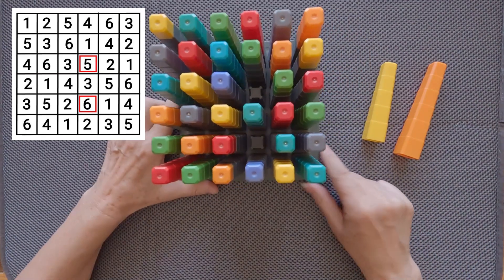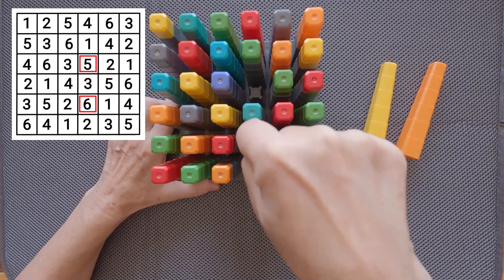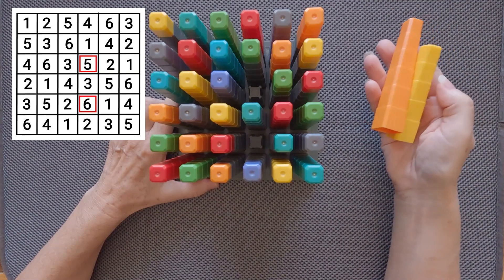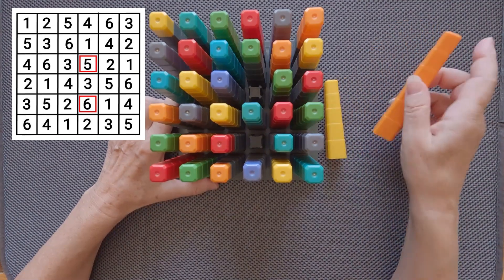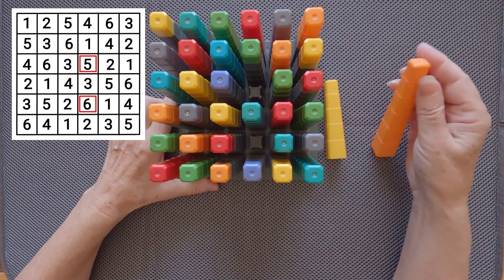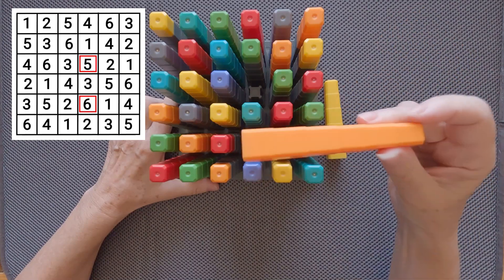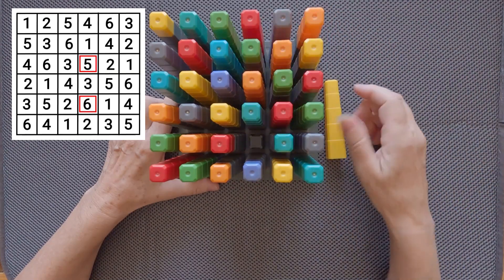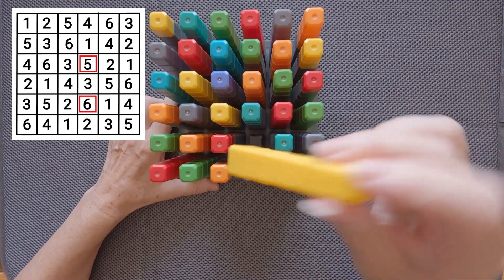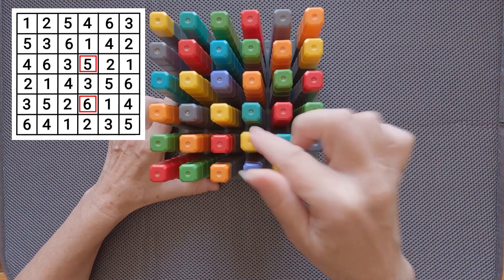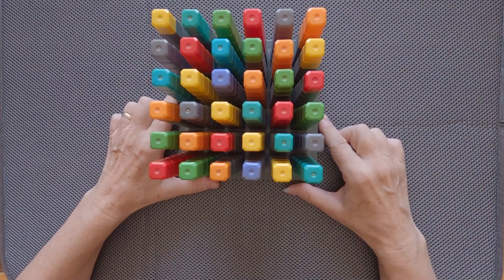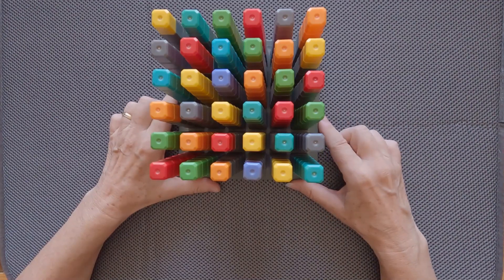So the solution comes from the two that work, and the two were here. Without that, we cannot solve. So the six can go in place of the five, or the five can go in place of the six. That's the way to solve the 36 cube puzzle.